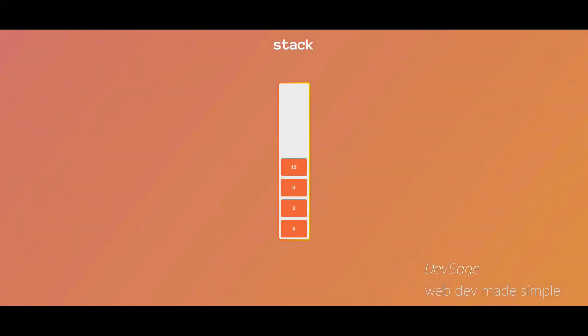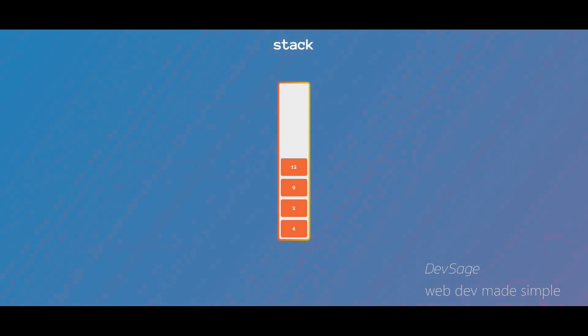What's up people, it's Dev Sage here and this is the third video in my JavaScript data structure series. In this video we'll be going over stacks. What is a stack? A stack is a linear collection of elements, kind of like the ones we've already seen, but a stack has certain properties and rules that it must follow.